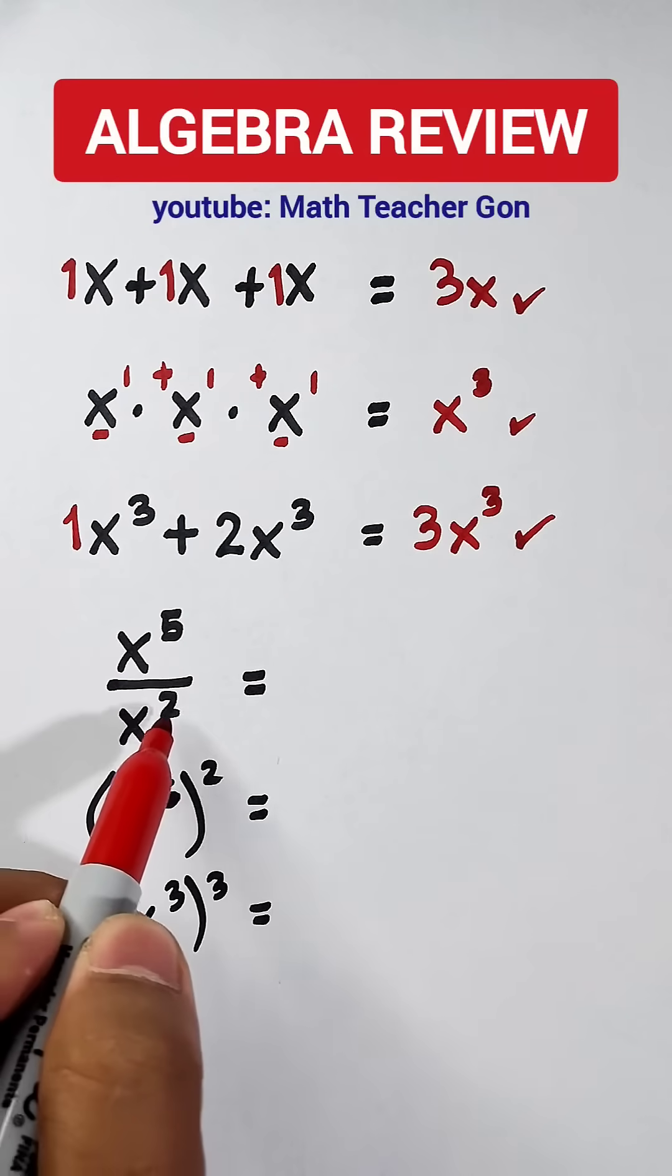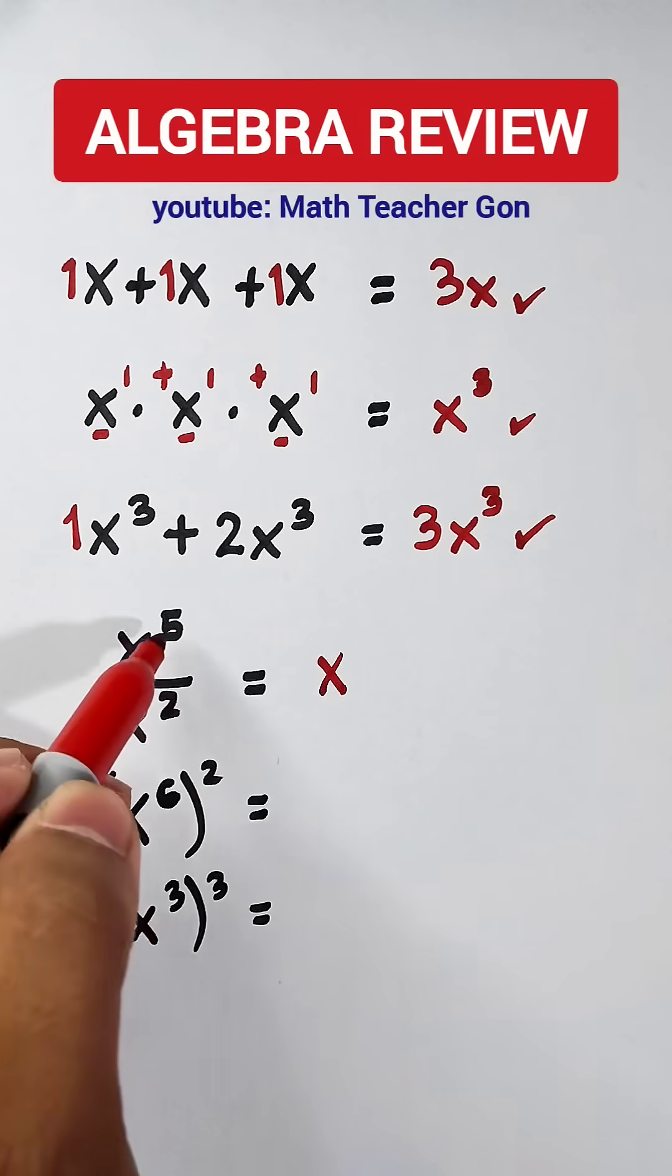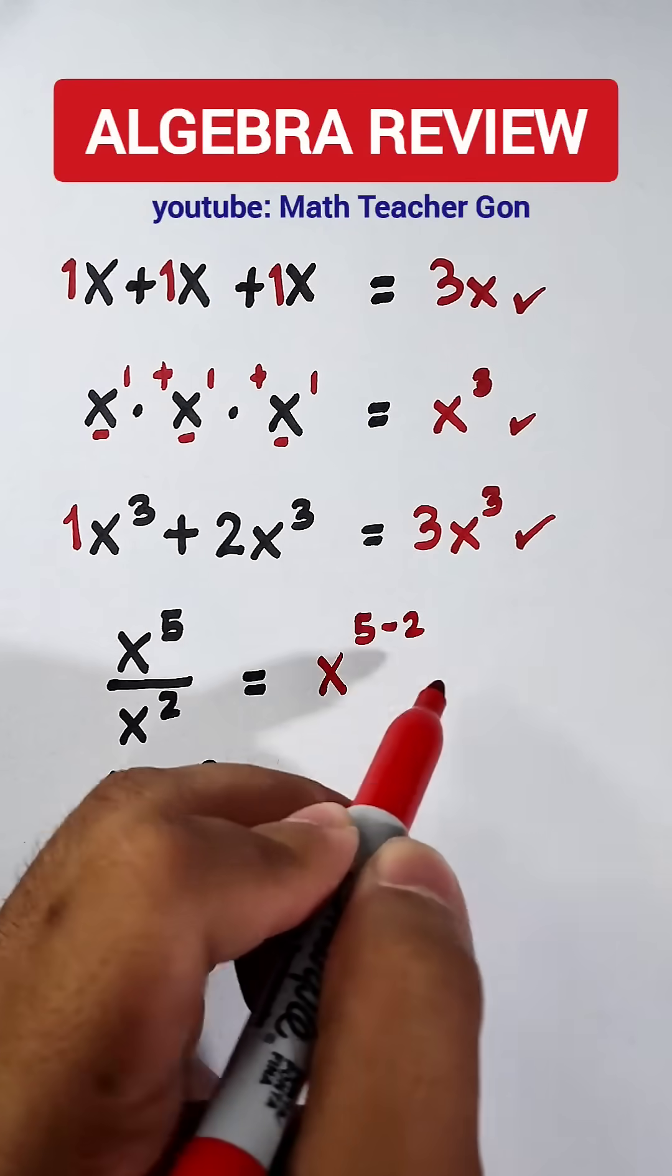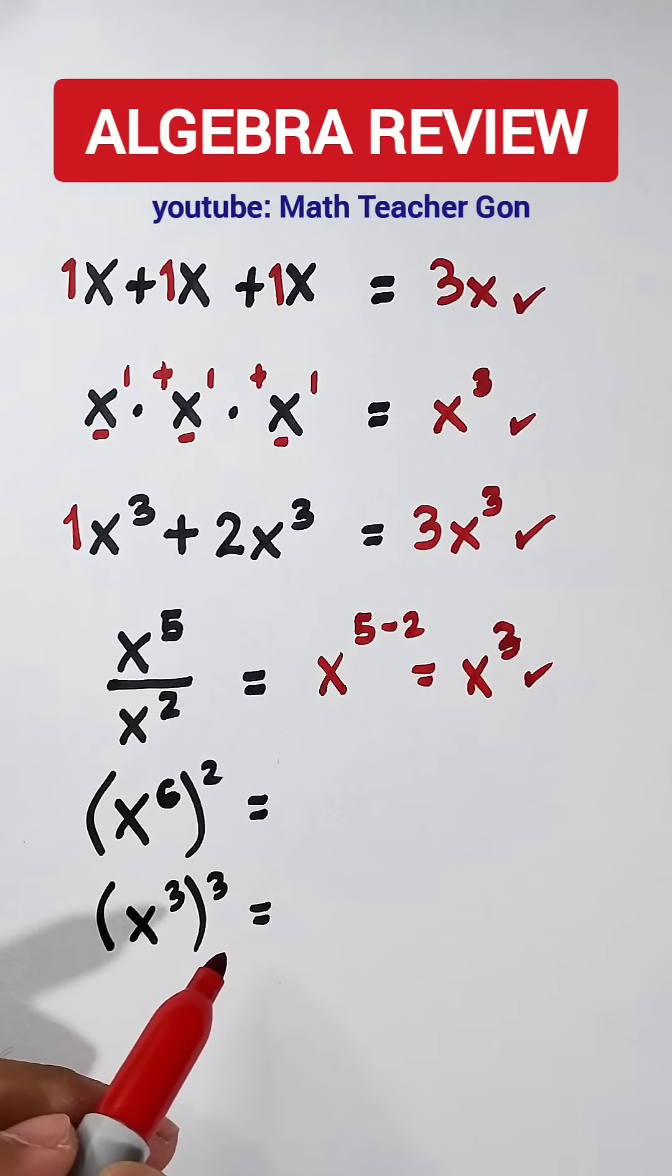x to the fifth power over x raised to two. Copy the same variable. What you need to do is subtract the exponents, five minus two. The answer is x cubed. That is for this example.